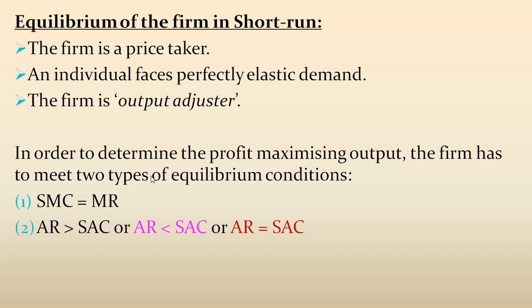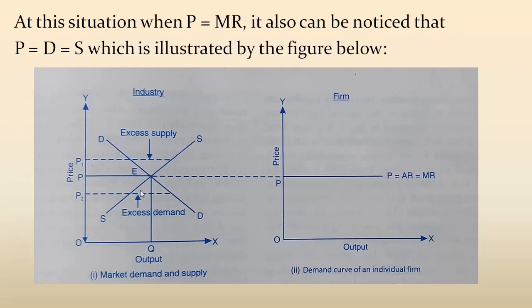You can see in this graph that this is your market price — point E where the demand curve D and supply curve S are intersecting. Please don't get confused between the industry and the firm in these diagrams. The graph on one side represents the industry or market, while the other graph represents the individual firm.